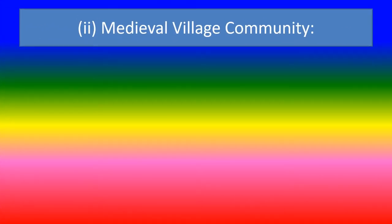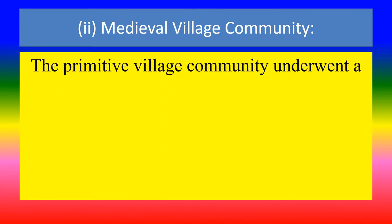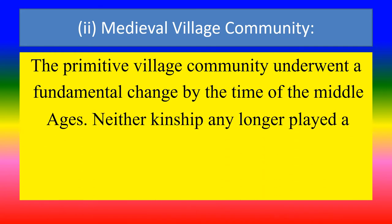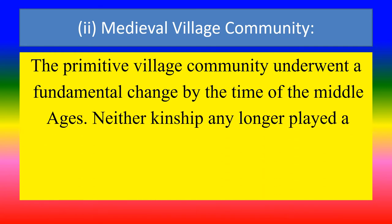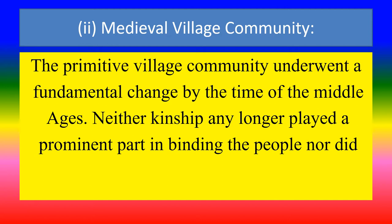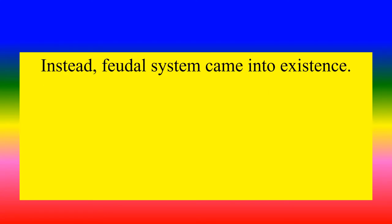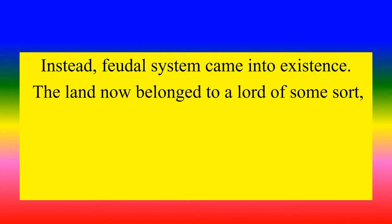Moving to the medieval village community, the primitive village community underwent a fundamental change. By the time of the Middle Ages, neither kinship any longer played a prominent part in binding the people, nor did the land belong to the group as a whole. Instead, a feudal system came into existence. The land now belonged to a lord, to the king, to a member of the nobility, or to an ecclesiastical body.